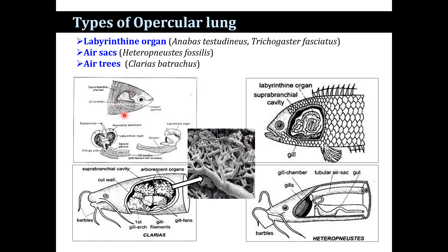In Trichogaster fasciatus, the accessory respiratory organ consists of a suprabranchial chamber, a labyrinthine organ, and the respiratory membrane. The suprabranchial chamber is situated just above the gill on either side, like in Anabas testudineus, and communicates with the pharynx by means of an inhalant aperture and with the exterior through the opercular chamber by means of an exhalant aperture. The labyrinthine organ develops from the epibranchial of the first gill arch and is simpler in structure compared to Anabas. It is in the form of a spiral organ possessing two lip-like expansions, composed of loose connective tissue covered by vascular epithelium. The respiratory membrane lining the air chamber consists of vascular and non-vascular areas, of which the vascular area possesses a large number of islets containing parallel blood capillaries. The islets are believed to be derived from the secondary lamellae of the typical gill filament.